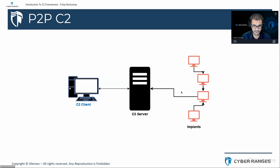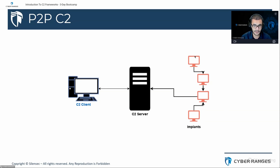In the P2P model, once you've gained access to one system within an internal network, you can gain additional access via pivoting. You then designate one particular system within the company's internal network as the single egress point for all outbound communication. As you take over the network system by system, you configure all of those systems to communicate with that single host designated as the egress point, so instead of all connections going back to the C2 server, all communication flows through that one compromise system.